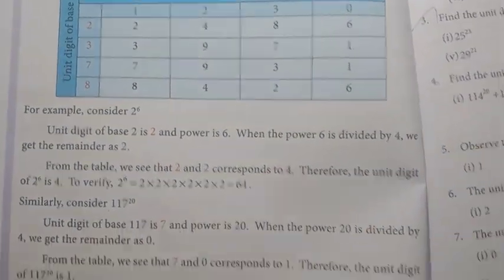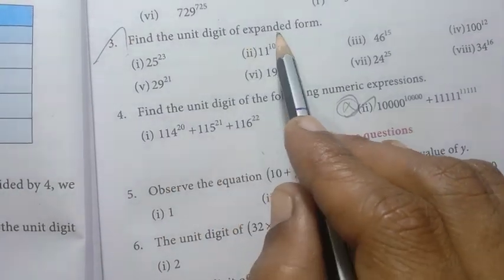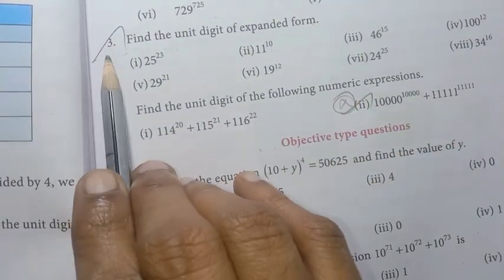Page number 57, third one: find the unit digit of the expanded form — it is important.